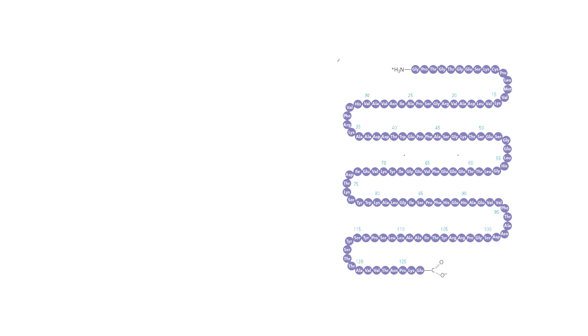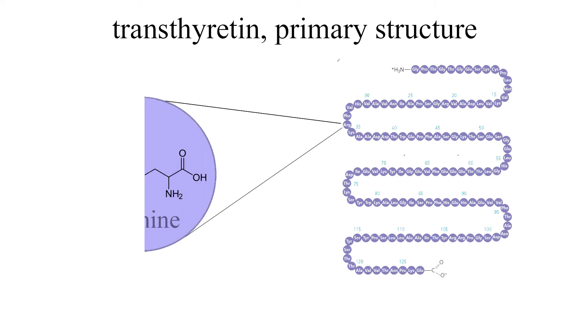The primary structure of a protein simply describes the amino acid sequence in its polypeptides. For example, the protein transthyretin's primary structure is shown here. Each three-letter symbol represents an amino acid.